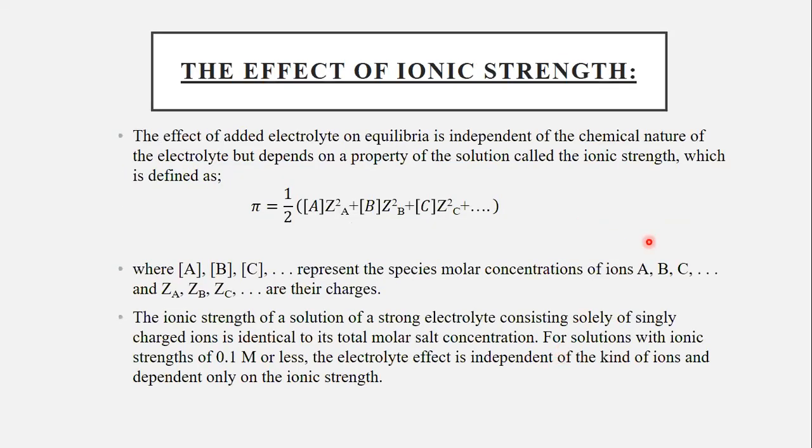The effect of ion strength. The effect of added electrolyte on equilibria is independent of the chemical nature of the electrolyte, but depends on a property of the solution called the ion strength, which is defined by this formula where a, b and c with the brackets represent the species molar concentration. This is shown in the law of mass action, which we discussed in our previous classes. It represents molar concentration. And z_a, z_b and z_c are their charges.